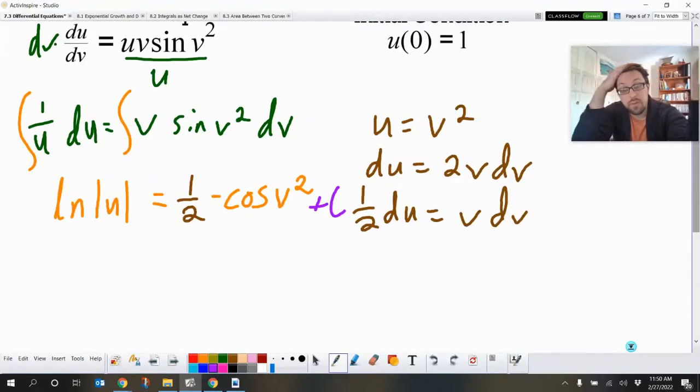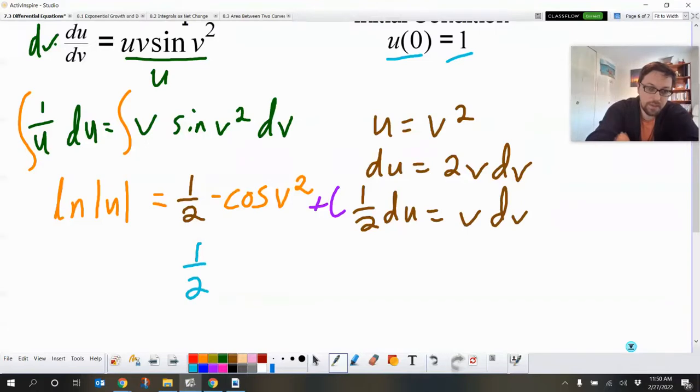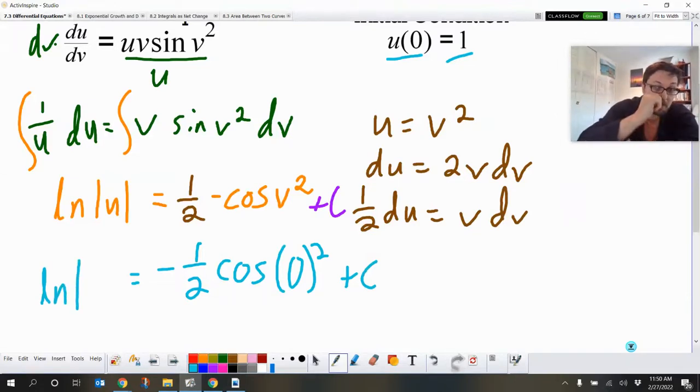So now we've got all of that. We have an option. We can either solve for u first or we can do that substitution first. I think what I would like to do is substitute in that value here just so we can figure out what c is really quick. That might make some of our later work a little bit easier. So u of 0, so that is, I want to stick a negative there, negative one-half cosine of 0 squared plus c equals the ln of the absolute value of 1.